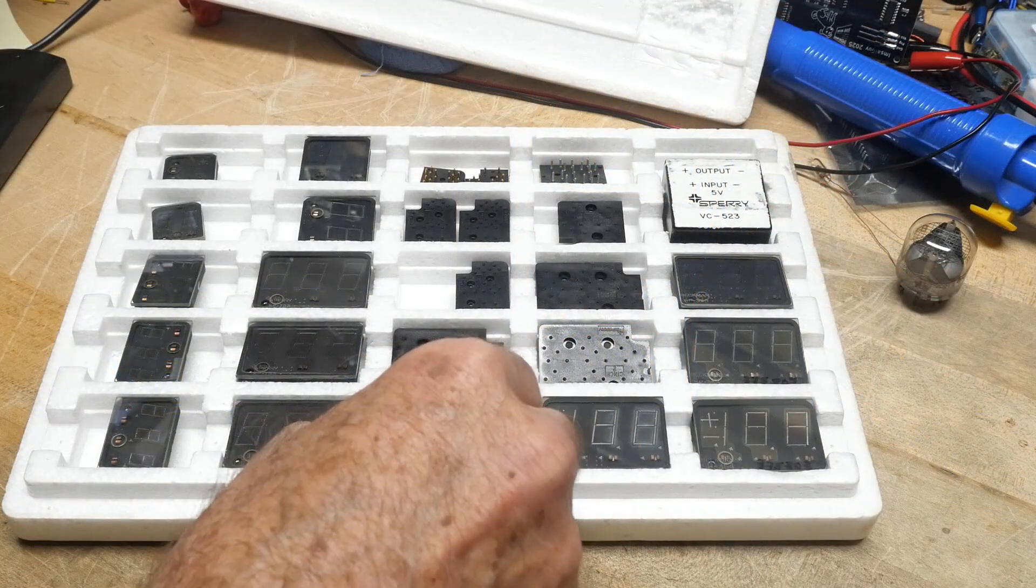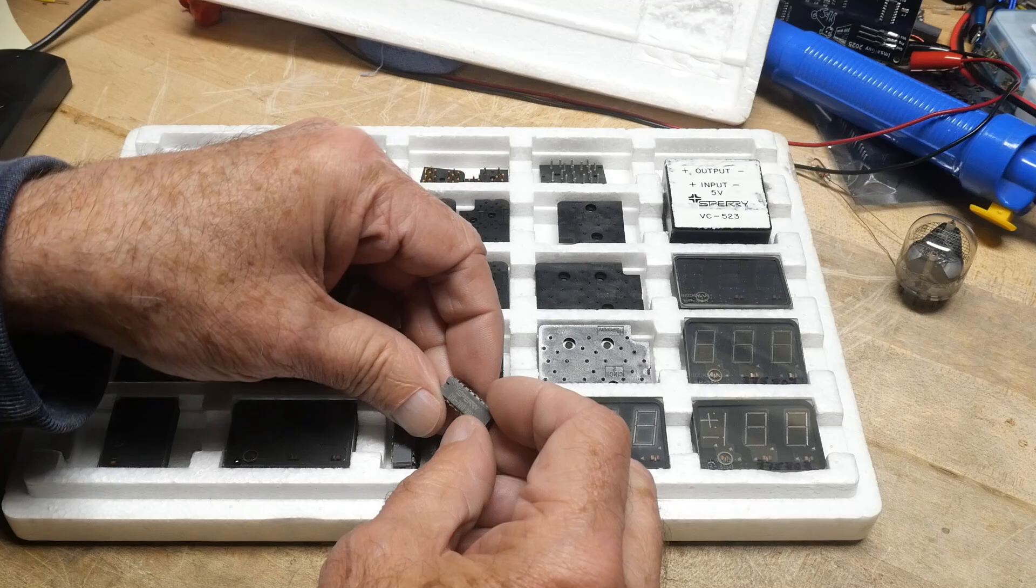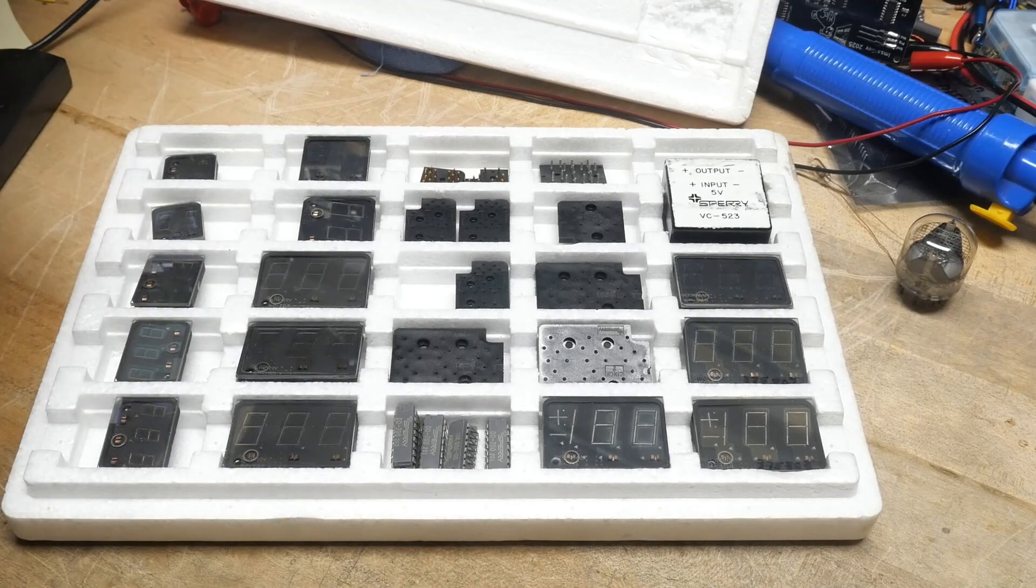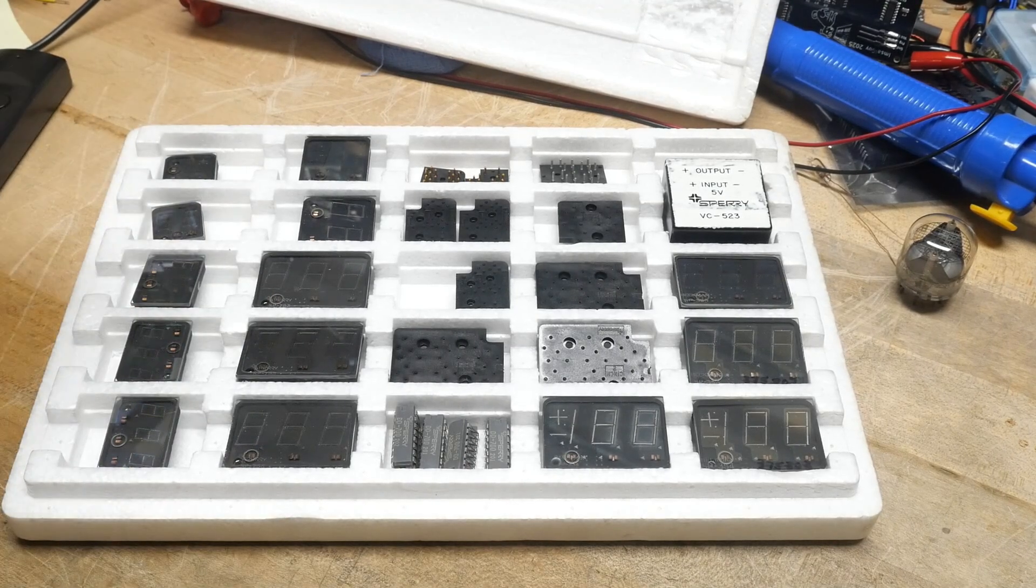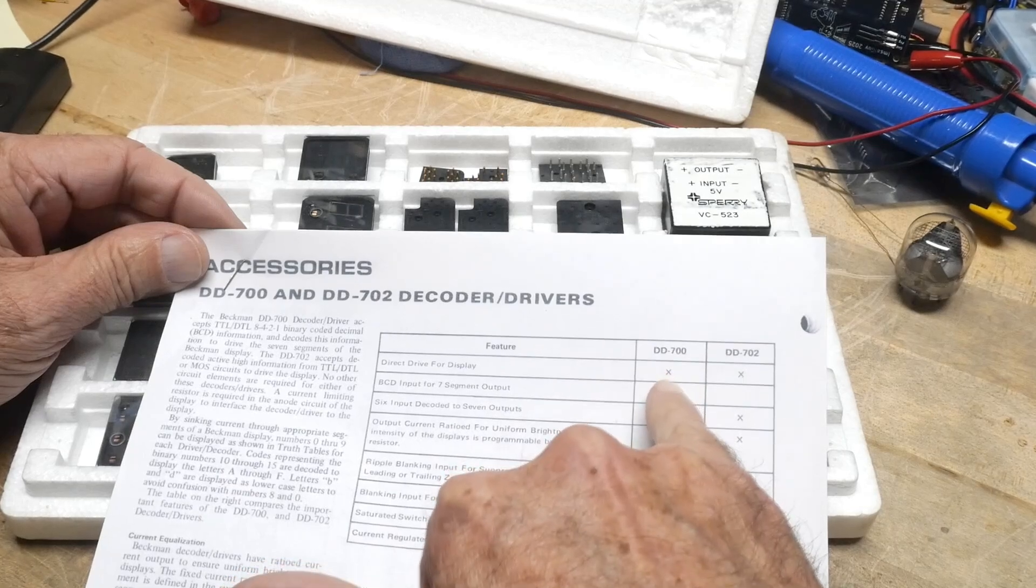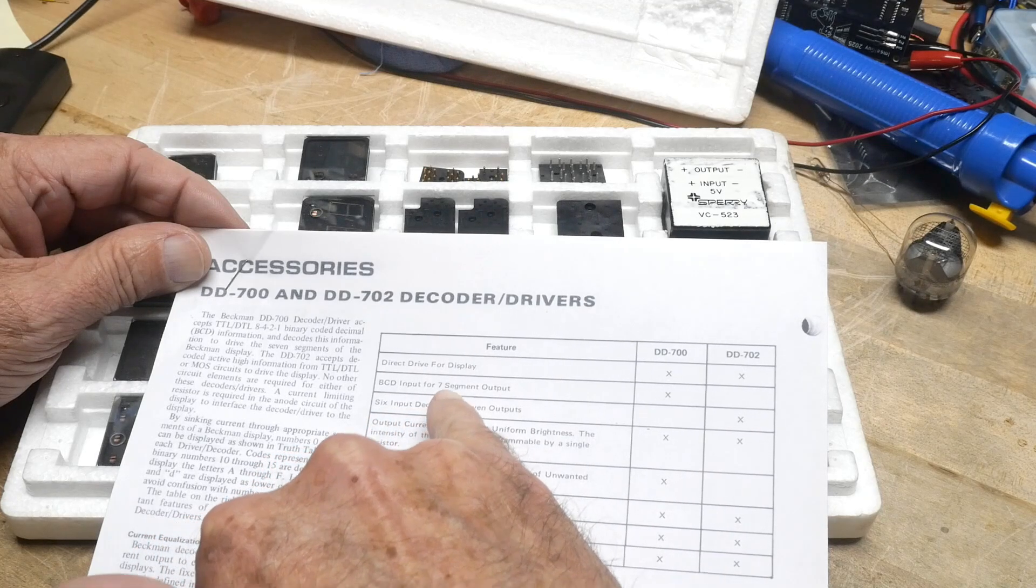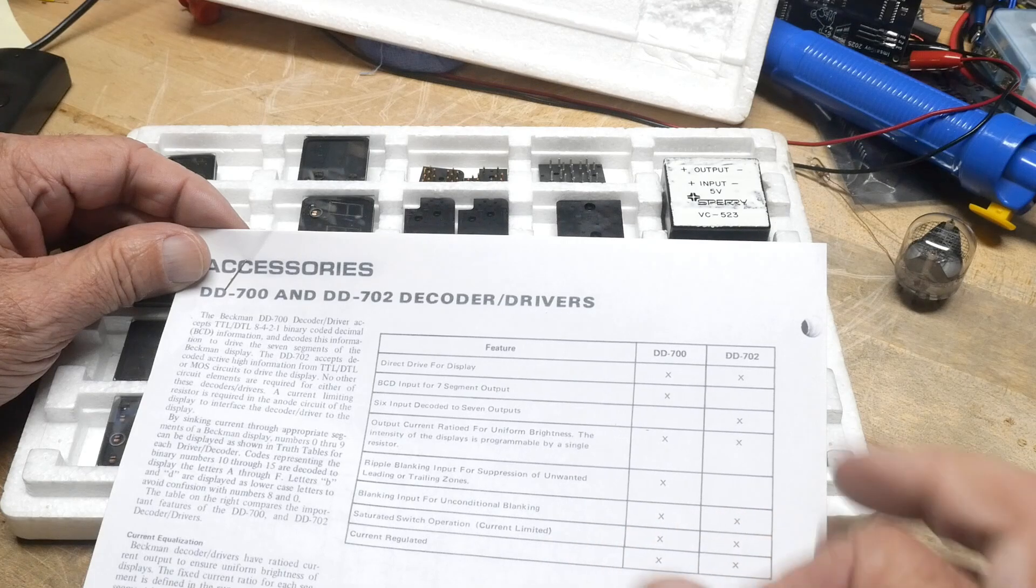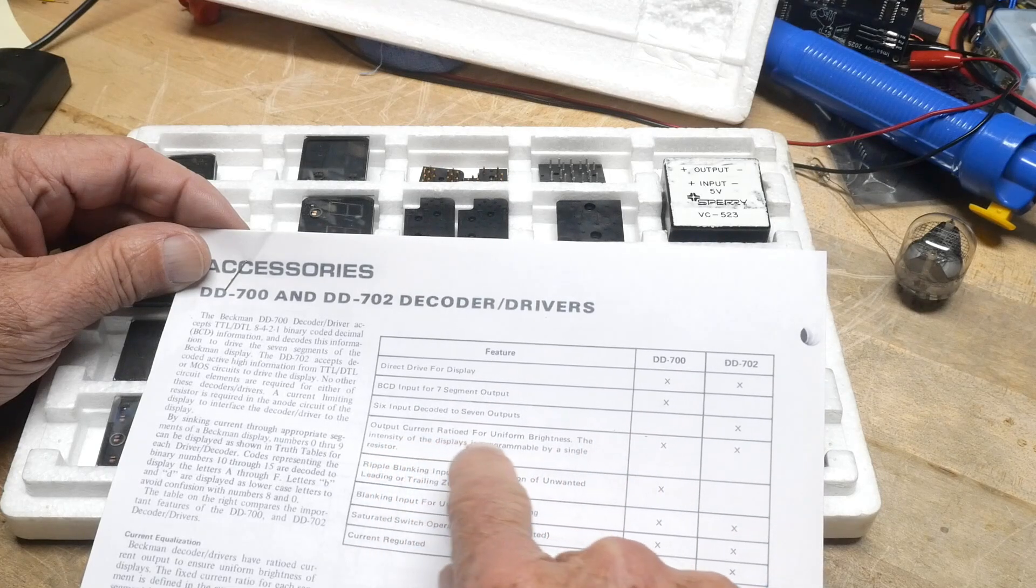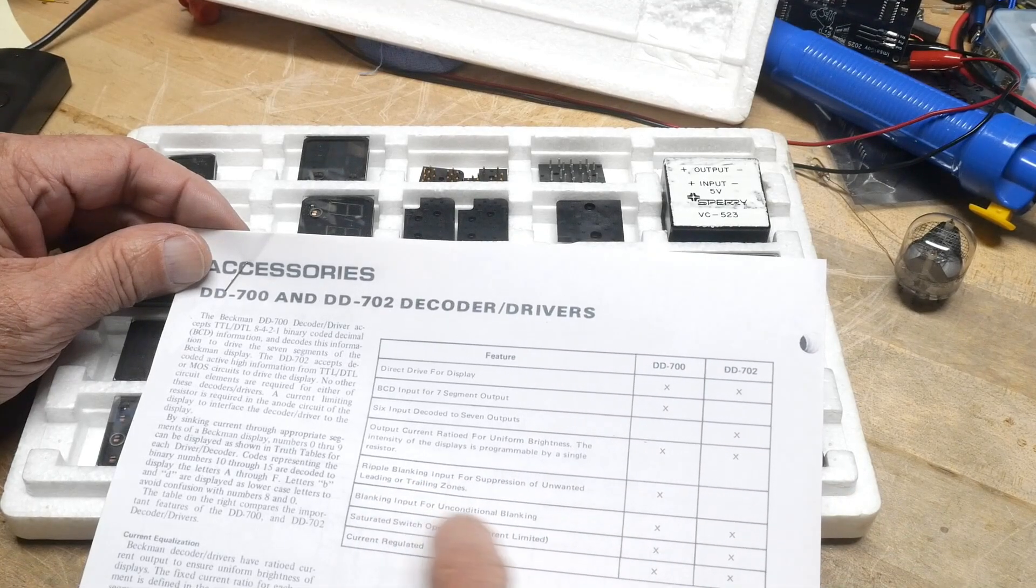All right, so we haven't talked about these ICs yet, so this will be chip of the day. Chip of the day is a Sperry DD 700. I found a data sheet, what are the odds? DD 700 is a direct drive for display, BCD input. Six input decoder for seven segments. Output current ratio, it has programmable brightness, ripple blanking, blanking input, saturated switch current regulated. It kind of does everything for you.